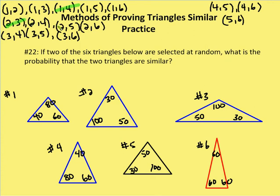2 and 4 are not similar. 2 and 5 are similar. 2 and 6 are not similar. 3 and 4 are not similar. 3 and 5 are similar. 3 and 6 are not similar. 4 and 5 are not similar. 4 and 6 are not similar. And 5 and 6 are not similar.